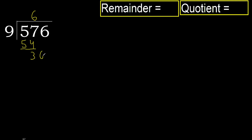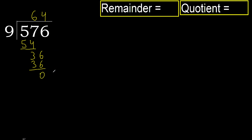Next: bring down 36. 9 multiplied by 5 is 45 — it's greater. Multiplied by 4 is 36 — it's not greater, ok. Subtract. There is not a remaining number, therefore finish.